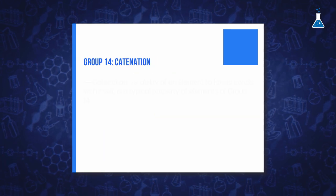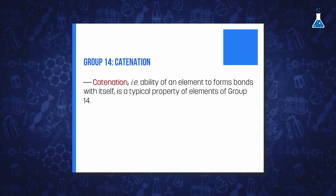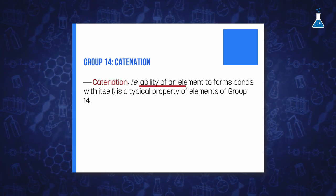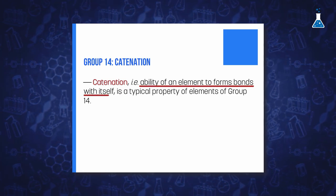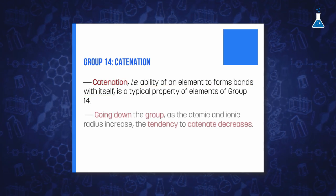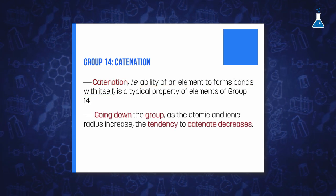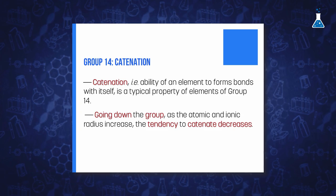In addition, the elements of this group possess the property of catenation, that is, the tendency of an element to form a bond with itself. However, the tendency to catenate decreases down the group as the atomic and ionic radius increase.